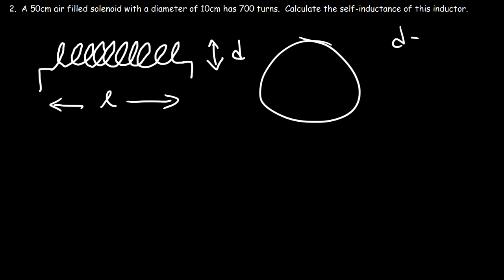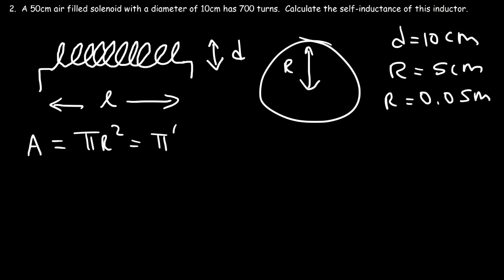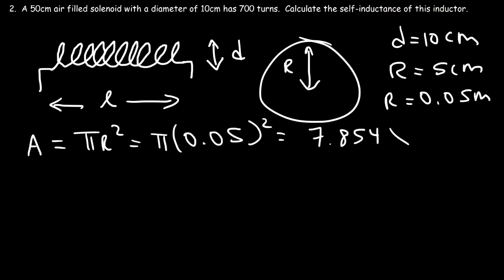If the diameter is 10 centimeters, the radius of the coil is 5 centimeters — half of the diameter. Converting to meters: 5 divided by 100 is 0.05 meters. The area of the coil is pi r squared, so that's pi times 0.05 squared, which is 7.854 times 10 to the minus 3 square meters. That's the cross-sectional area.